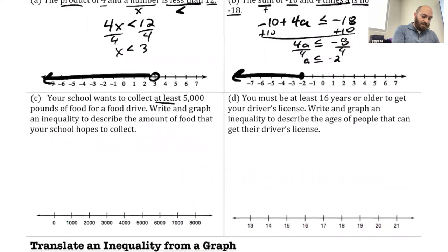Your school wants to collect at least 5,000 pounds of food for a food drive. Write and graph an inequality to describe the amount of food that your school hopes to collect. So it doesn't give us a variable, so pick whatever you want. We'll just say food, we'll say F. So F, we want at least 5,000. So the question is, is 5,000 pounds of food at least 5,000? Yes. Is 6,000 at least 5,000? Yes. So we want the amount of food to be greater than or equal to 5,000 pounds. So that's going to give me a closed circle on 5,000 and off to the right.